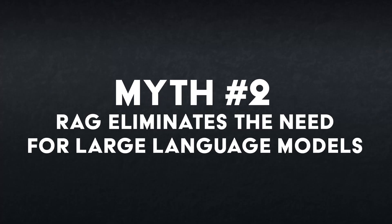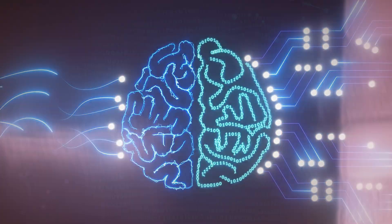Myth number two: RAG eliminates the need for large language models. Not so fast. While RAG can enhance smaller models, it still needs a capable base model to effectively use the retrieved information. It's not about replacement, but augmentation. LLMs are still essential for understanding the retrieved information, generating coherent text, and adapting to different query formats. LLMs act as the brain of the RAG system, and the effectiveness of RAG often depends on the size and quality of the underlying LLM.